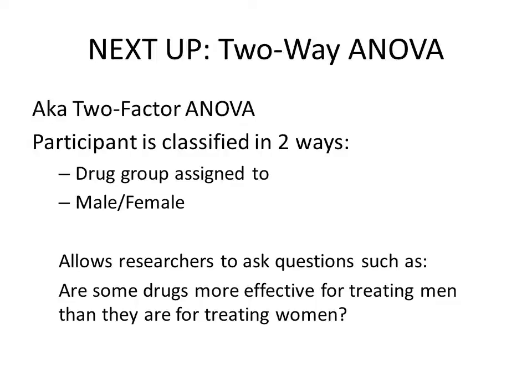ANOVA is actually more widely used than the t-test when comparing means. The t-test is still taught in introductory statistics courses and is widely used when only two means are being compared. However, most researchers, particularly in psychology or the behavioral and psychological sciences, will use an ANOVA instead of a t-test.